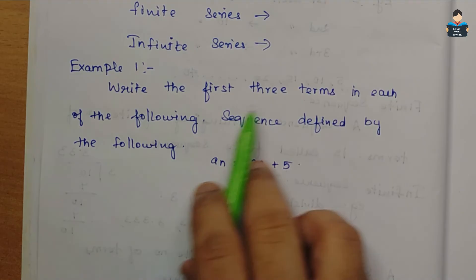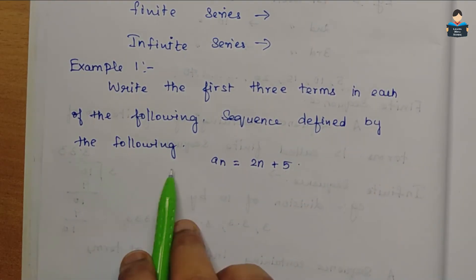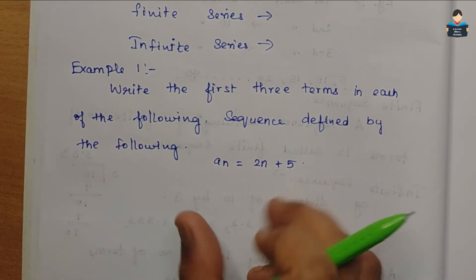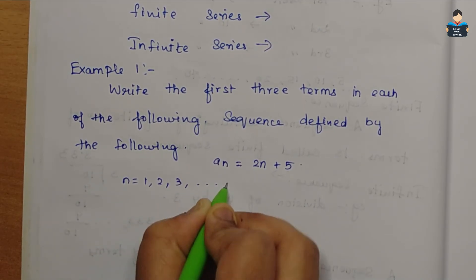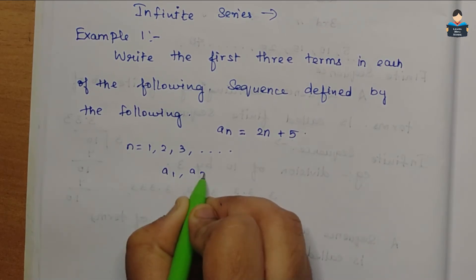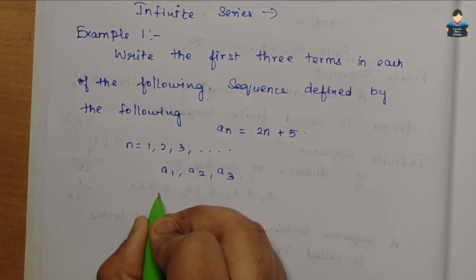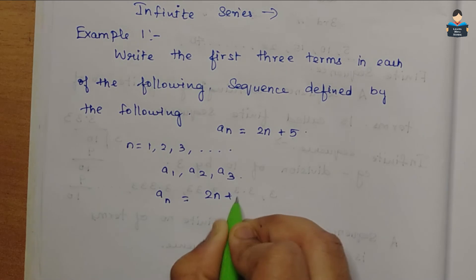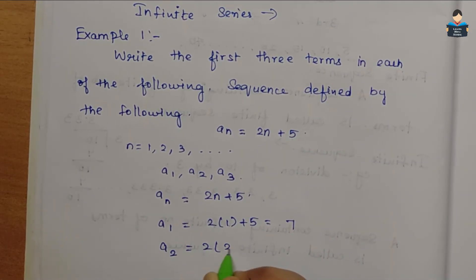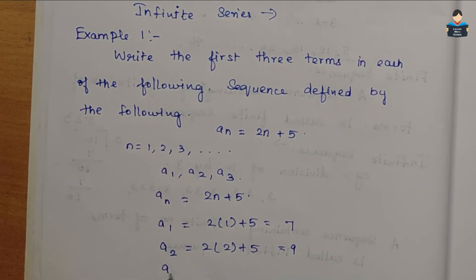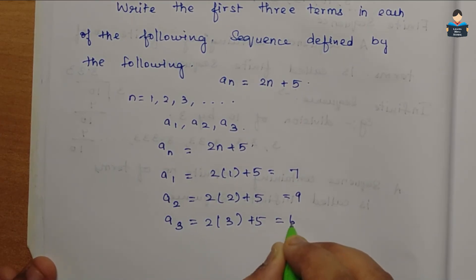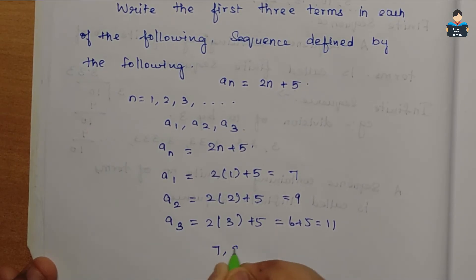Now let's see an example: write the first three terms of the sequence defined by An = 2n + 5. We substitute n = 1, 2, 3. So A1 = 2(1)+5 = 7; A2 = 2(2)+5 = 9; A3 = 2(3)+5 = 11. Therefore the first three terms of the sequence are 7, 9, 11.